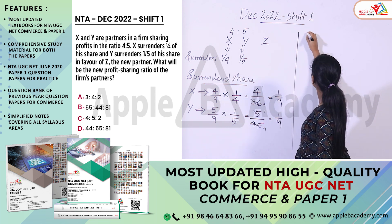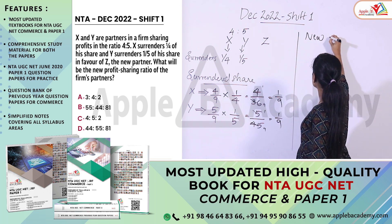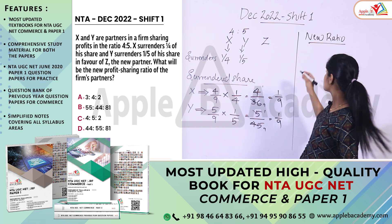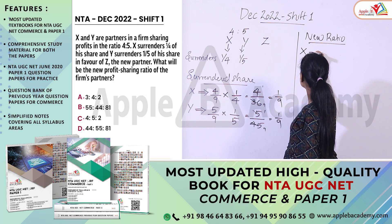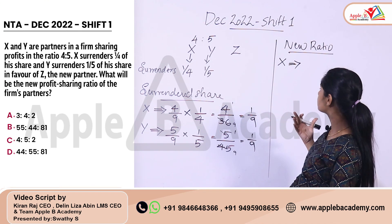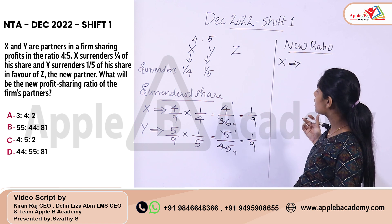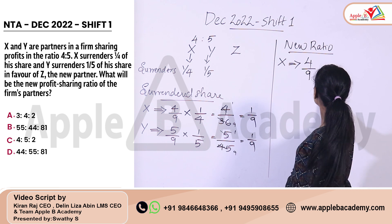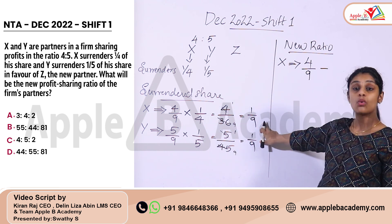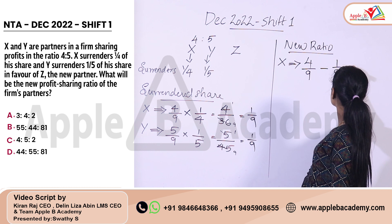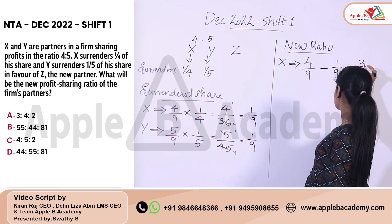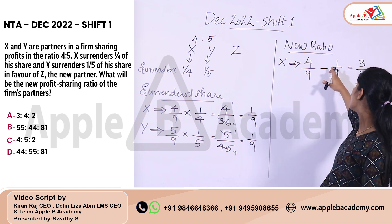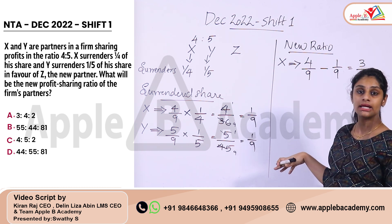Now we calculate the new profit sharing ratio. X's new share equals X's old share minus X's sacrifice: 4/9 minus 1/9. The LCM is 9, so 4 minus 1 divided by 9 equals 3/9.